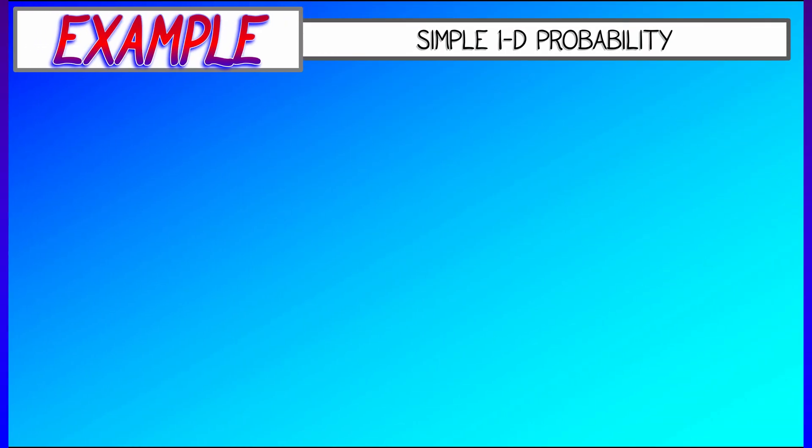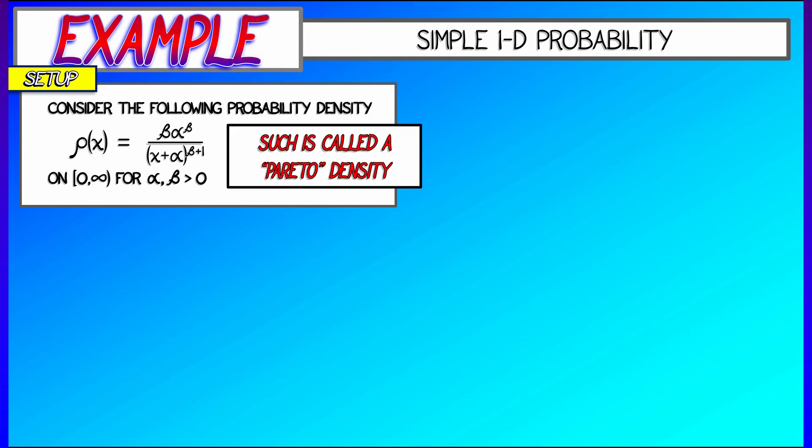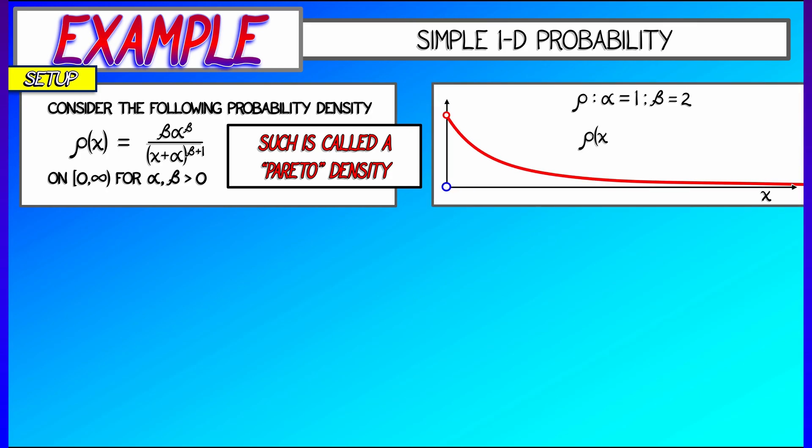Let's take a minute or two and look at an example of a probability density. This is called a Pareto density. It's of the form beta times alpha to the beta divided by quantity x minus alpha to the beta plus 1. Here, alpha and beta are positive constants. And here, this is kind of important, this probability density is not on the entire reals, but rather on the right-hand side, on the region from 0 to infinity. If you want, you can just assume that this density is 0 for negative values of x.